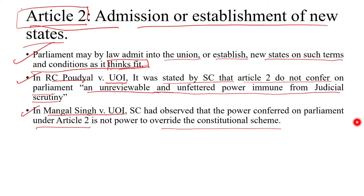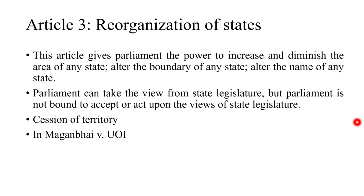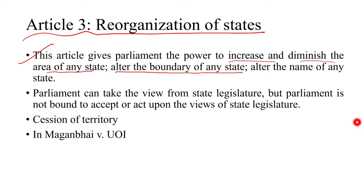Moving to reorganization of states, Article 3 gives parliament the power to increase and diminish the area of a state, alter the boundary of any state, or alter the name of any state. So parliament has the power to increase, decrease, or alter the boundary or name of any state.